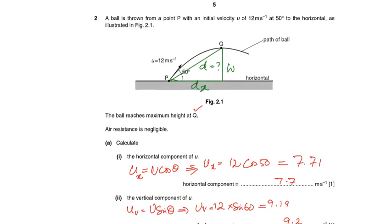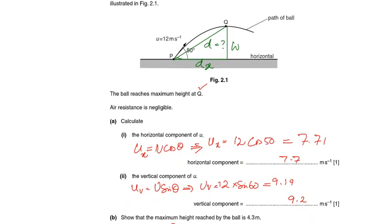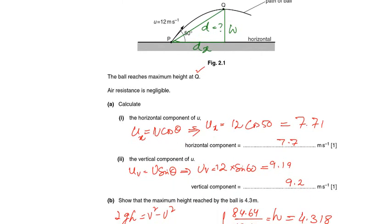This is projectile motion. The horizontal component will be u cosine theta. Ux equals u cosine theta. Speed is 12 meters per second, angle is 50, so cosine 50 equals 7.71, rounding to two significant figures gives 7.7.